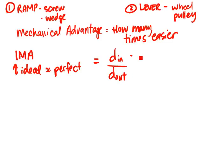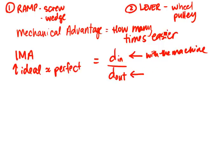The input distance means the distance that you need to put in with the machine, and the output distance would be the distance you need to move without the machine.